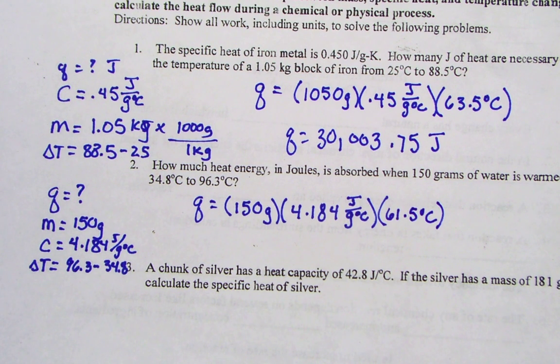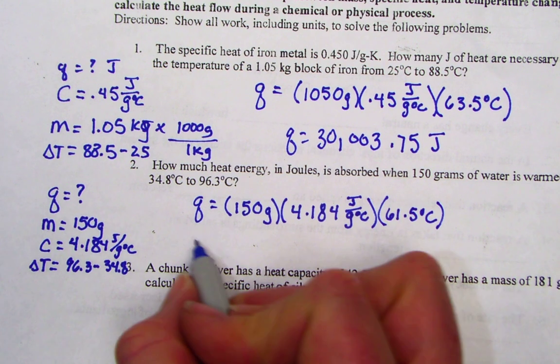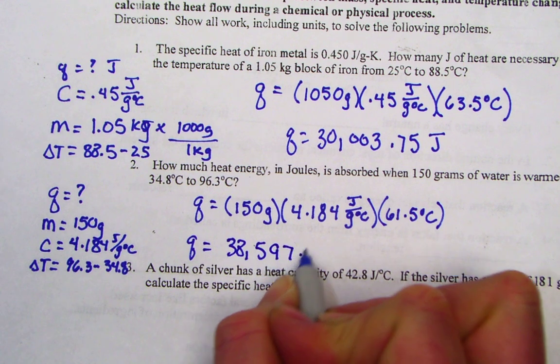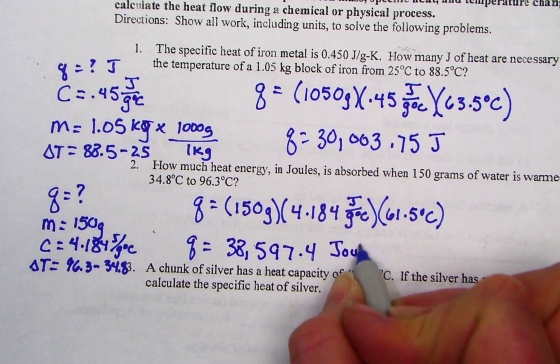MC delta T, calculating that out, 4.184 times 150. I'm showing a value for Q of 38,597.4 joules of energy.